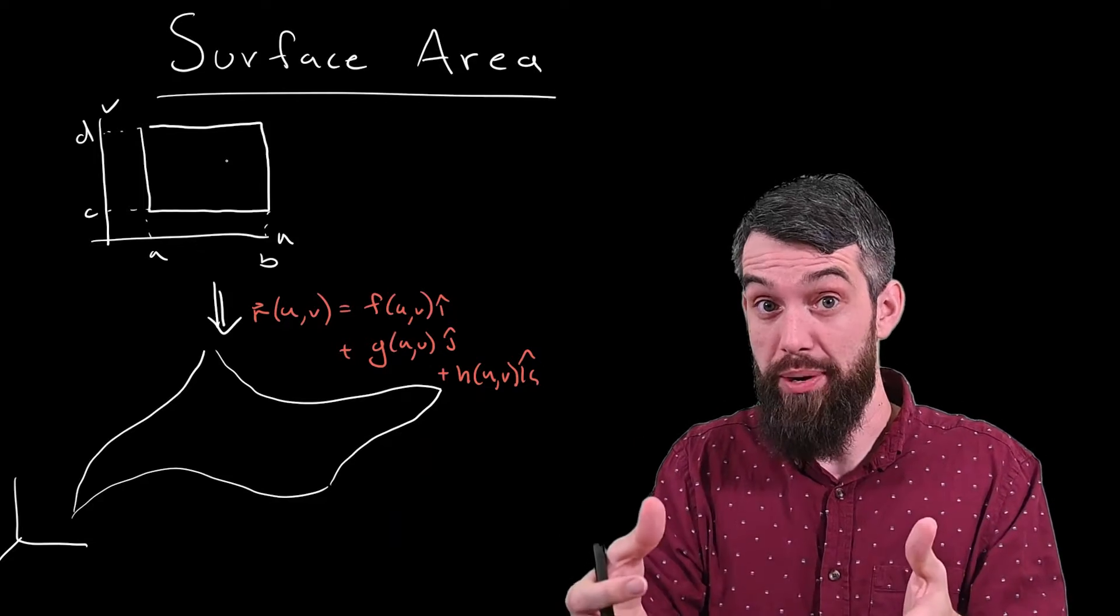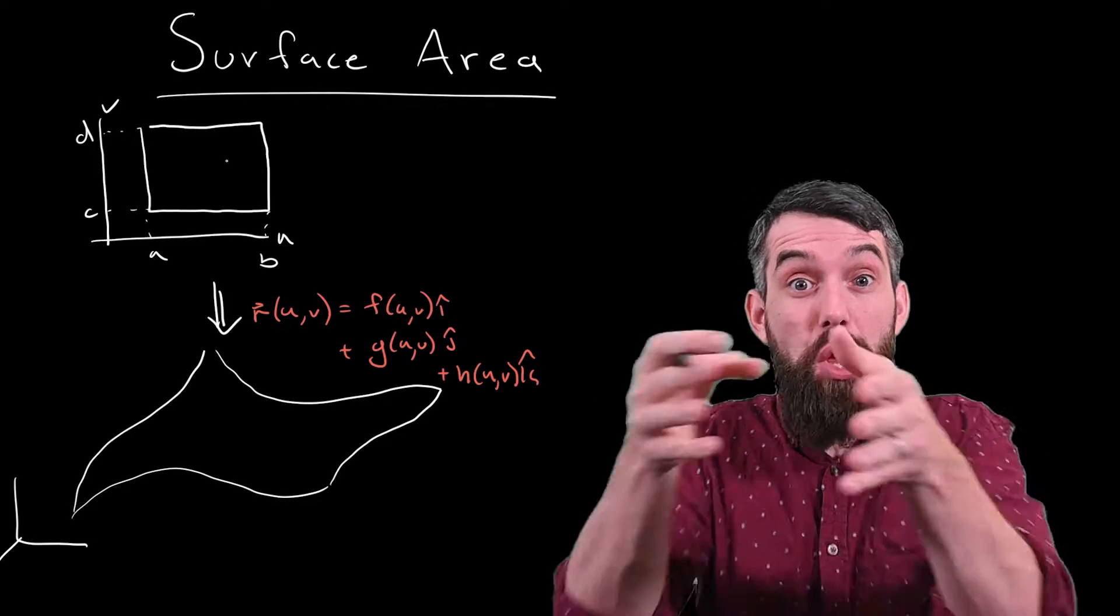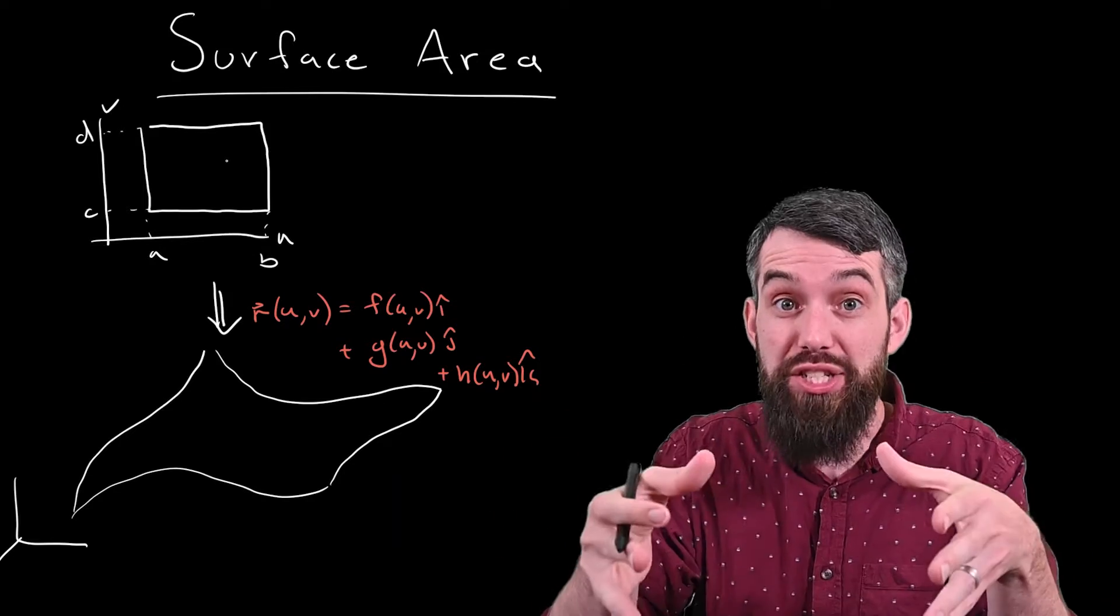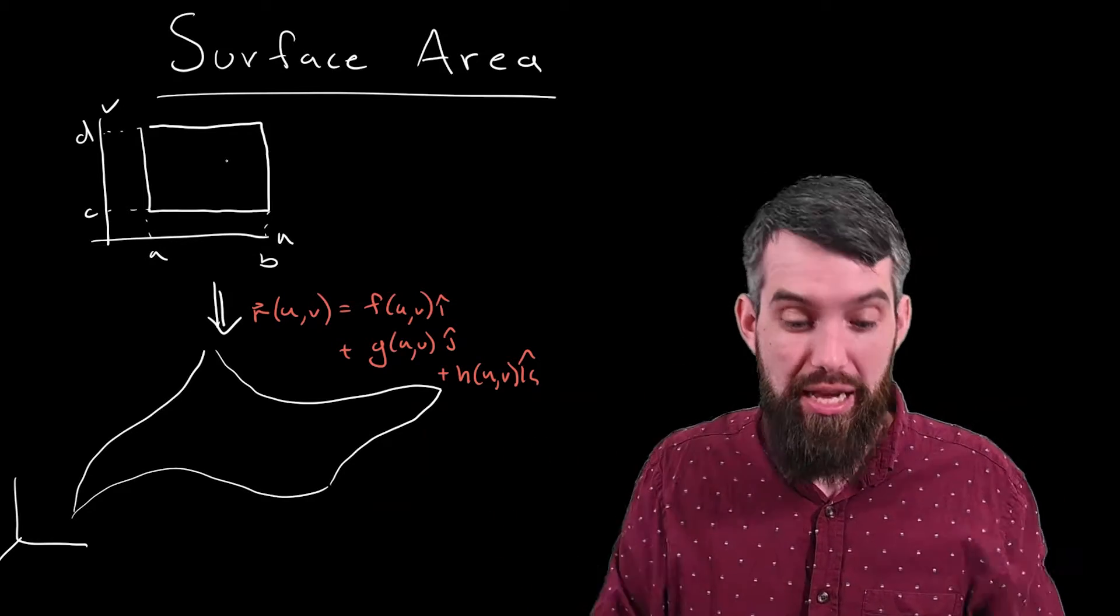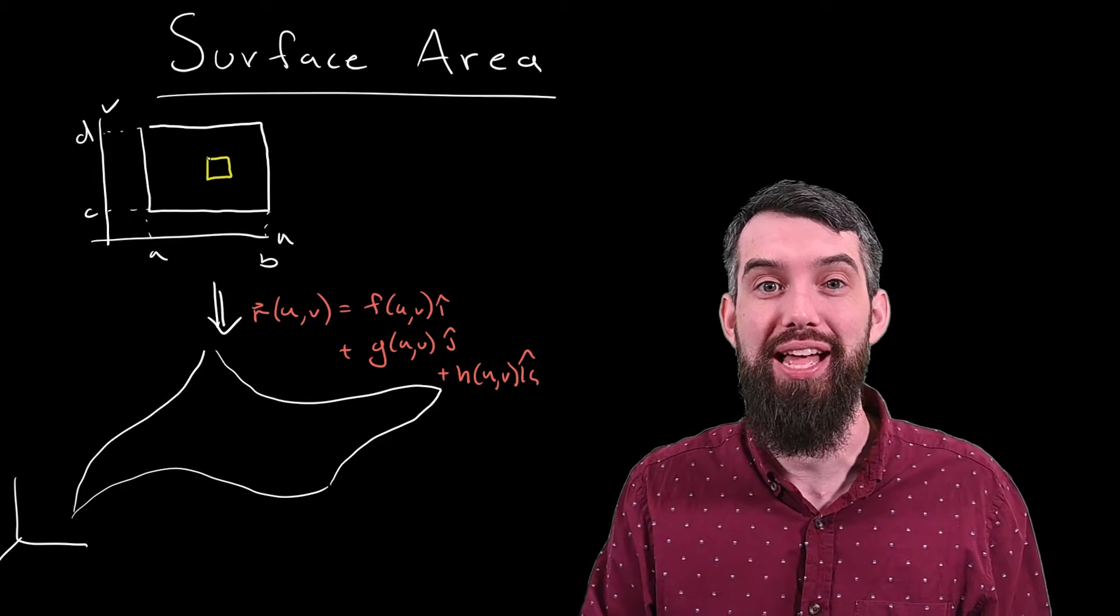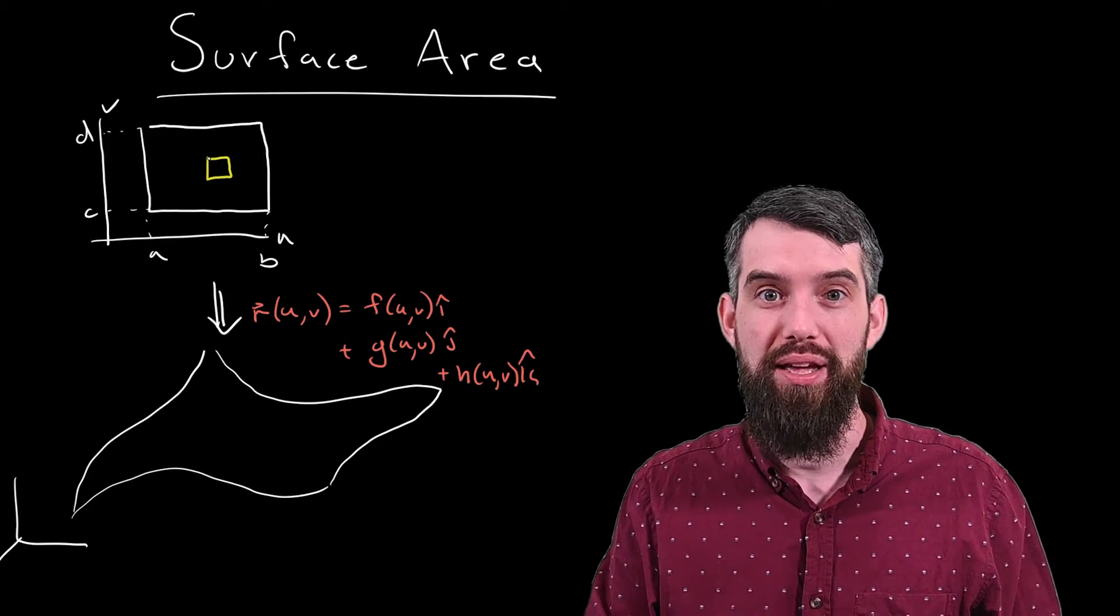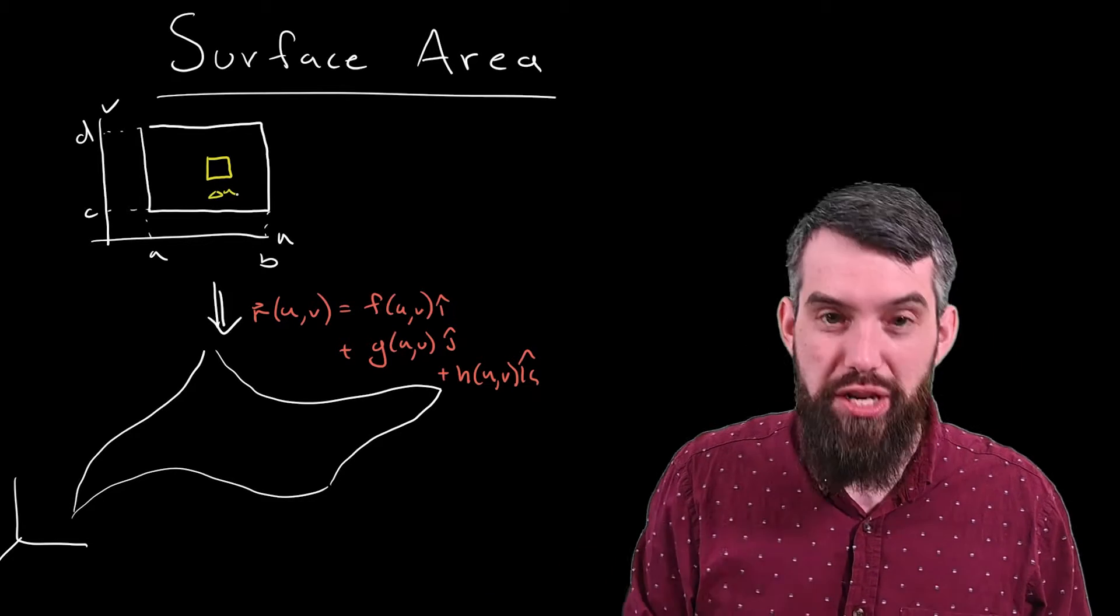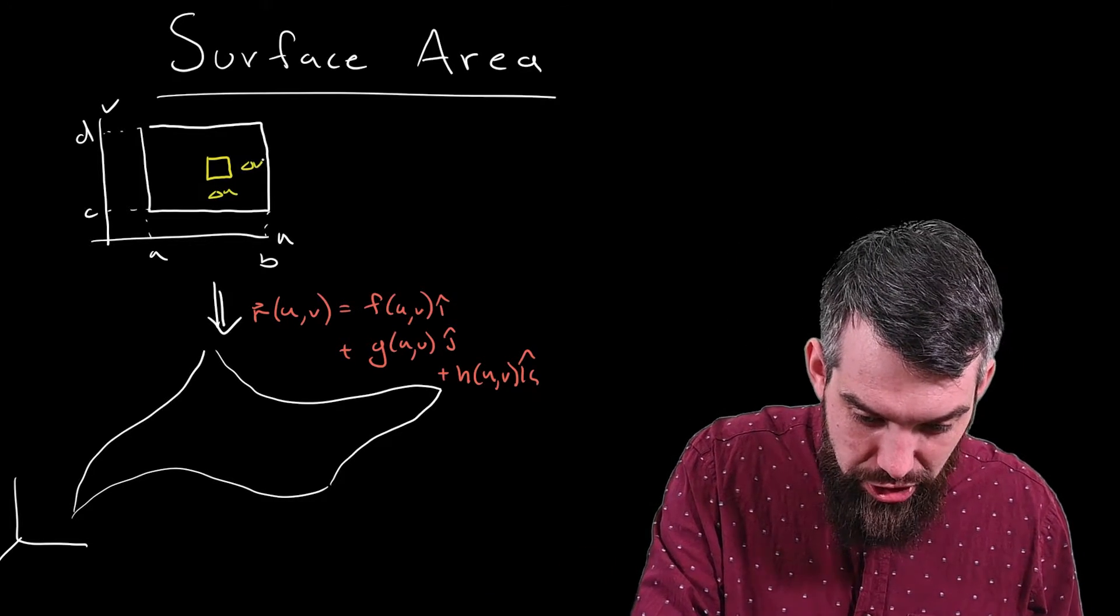Now, we're going to solve this with integration. And the big idea of integration is always solve it for one small little piece, and then add up over the entire region to get the answer for everything. So I want to imagine I've got a small little rectangle inside of the U-V plane. This little rectangle may have a width, a change in U, and a height, a change in V.